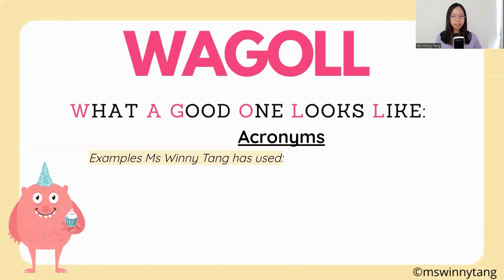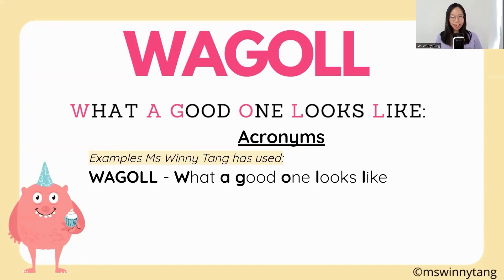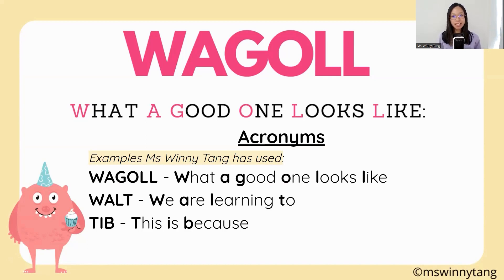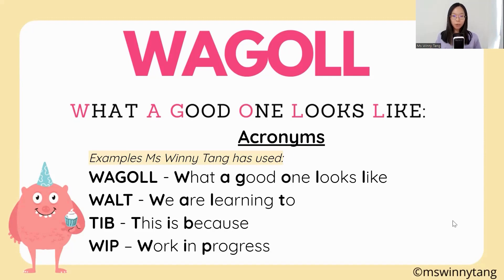Acronyms — here are some acronyms I have used. Did you notice that WAGOLL — What A Good One Looks Like — is an acronym? You've also got WALT — We Are Learning To — and TIB — This Is Because. There's also another acronym my friend and I use when drafting, writing and editing our book. We name our document WIP, which stands for Work In Progress, because we are constantly working on the manuscript of our book together.